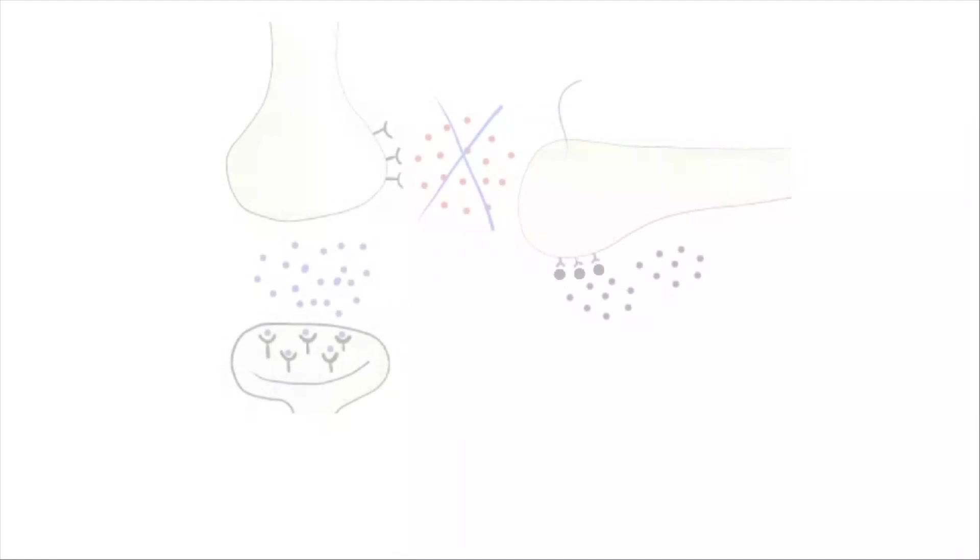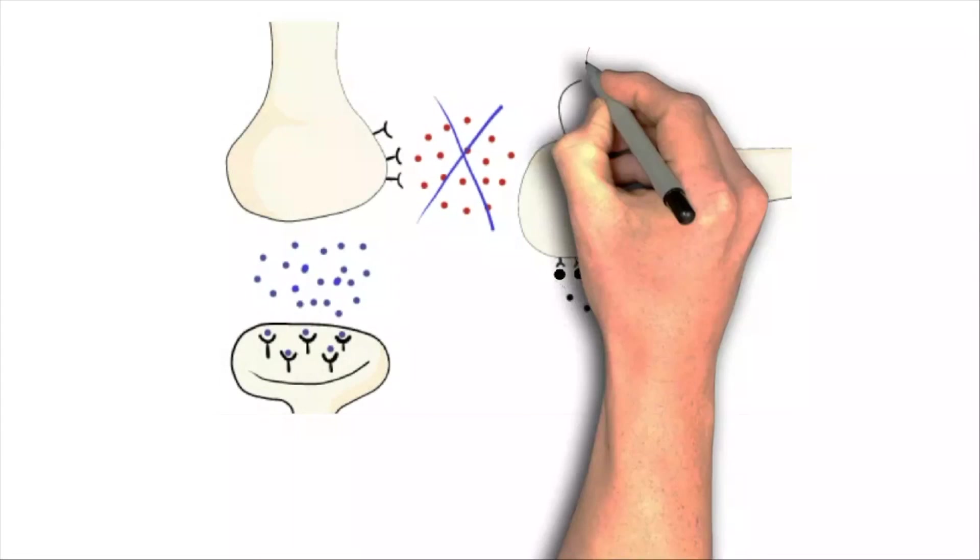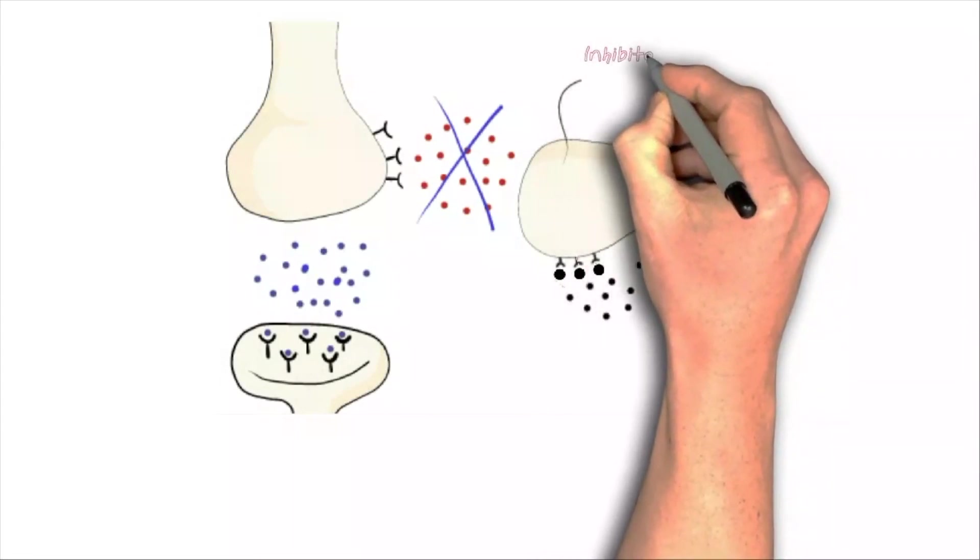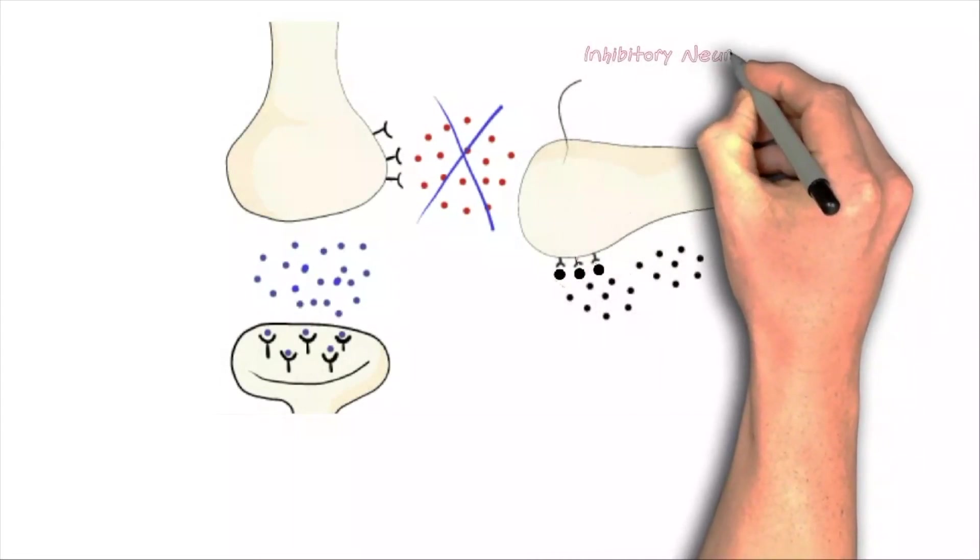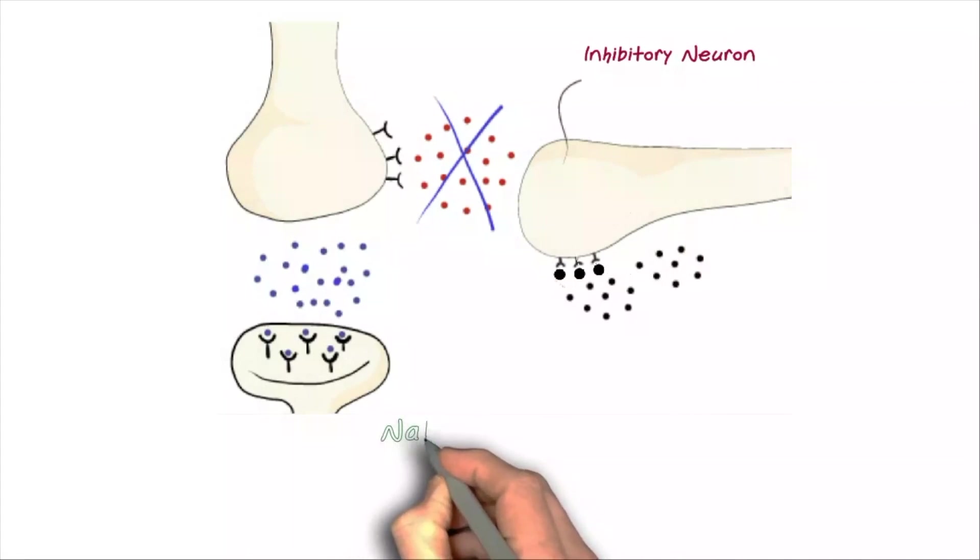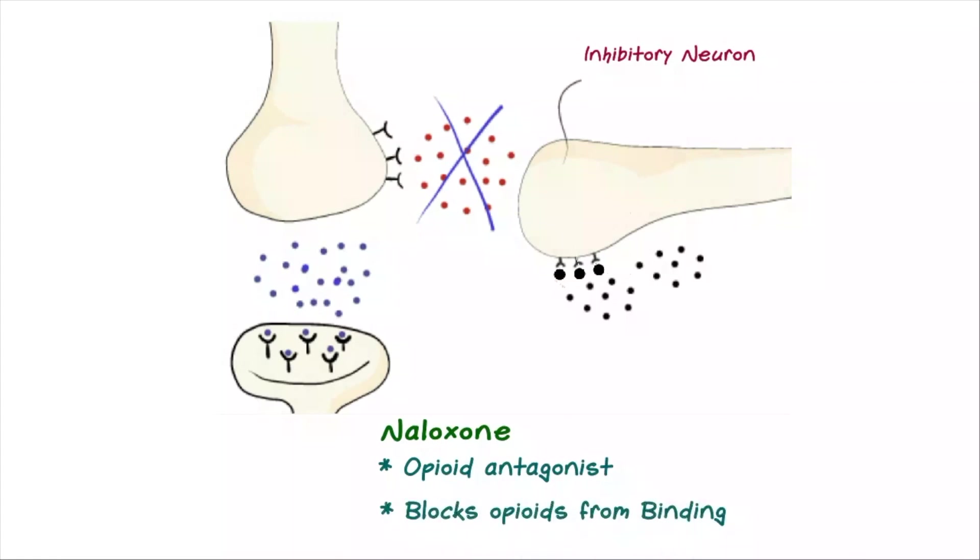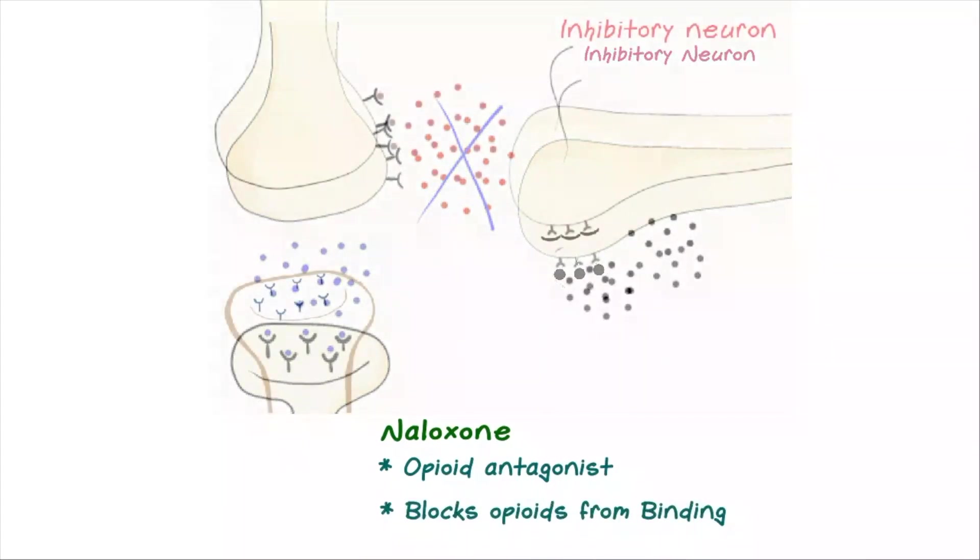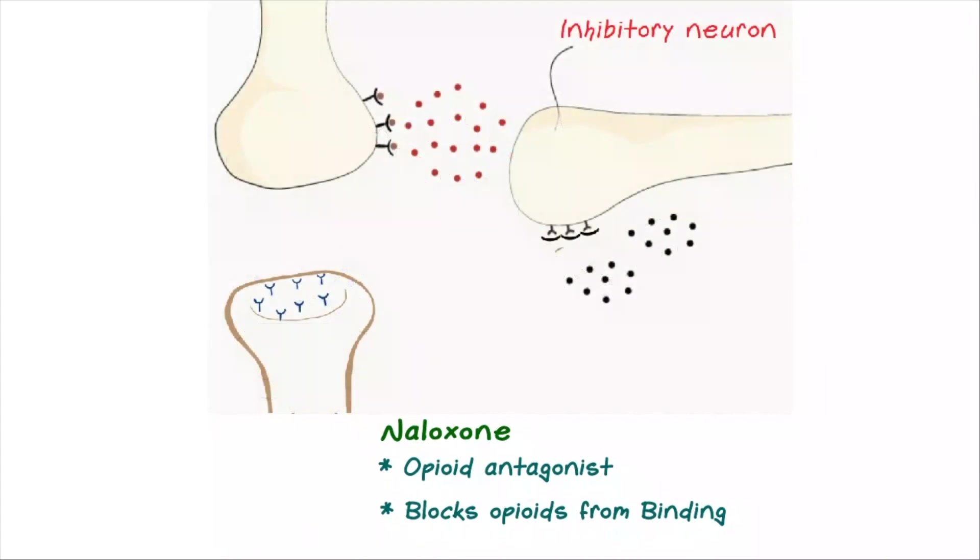Naloxone is an opioid antagonist that powerfully binds to opioid receptors. And rather than having a direct effect, it blocks other opioids from binding and activating the receptor. This works because at any given moment, opioids are binding and unbinding to receptors. Which means once an opioid releases its hold of a receptor, the naloxone can simply sneak in and bind more strongly. When naloxone given intravenously, it can reverse the effects of opioids within minutes. Potentially saving a person's life.